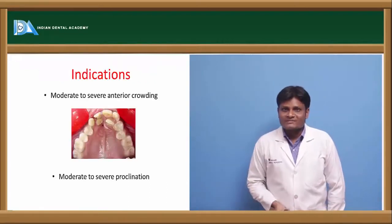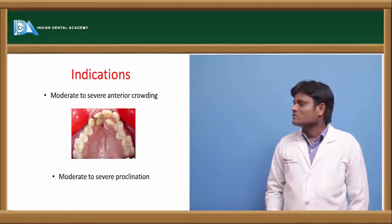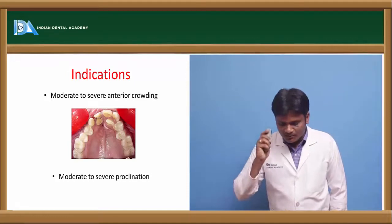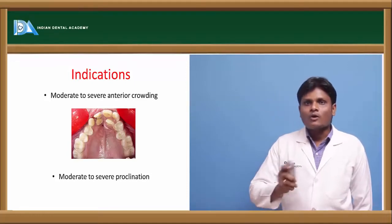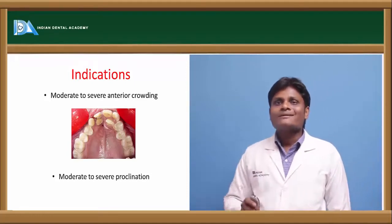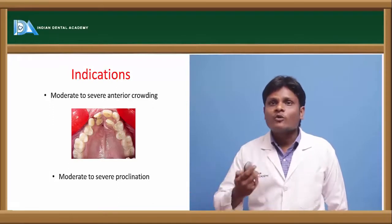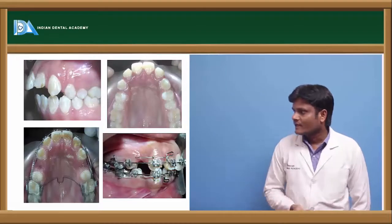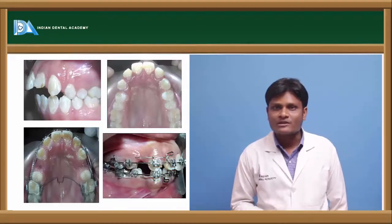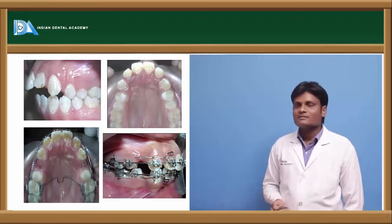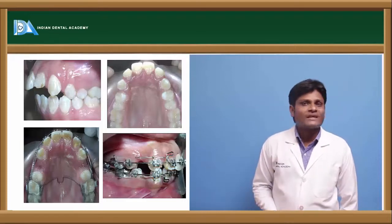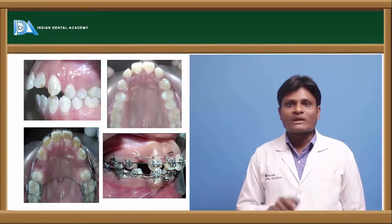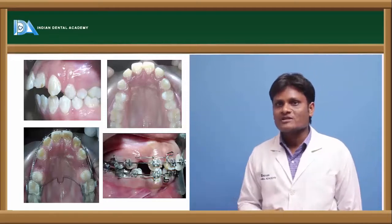The indications of first premolar extractions are moderate to severe crowding and moderate to severe proclination. When a patient has moderate or severe crowding or proclination, we will go for first premolar extractions. This is a case where we can see severe proclination, and first premolar extraction was done; subsequently the extraction space is closed by posterior movement of the anteriors, which reduces the proclination and its effect on facial appearance.